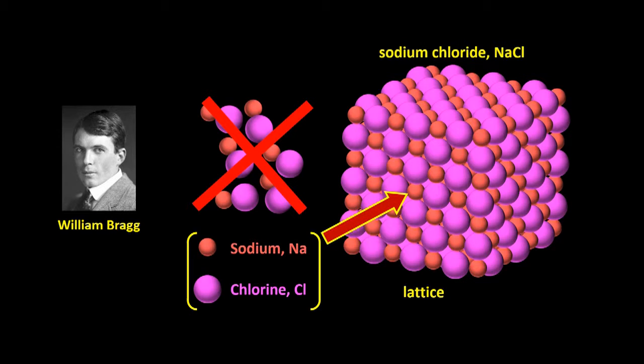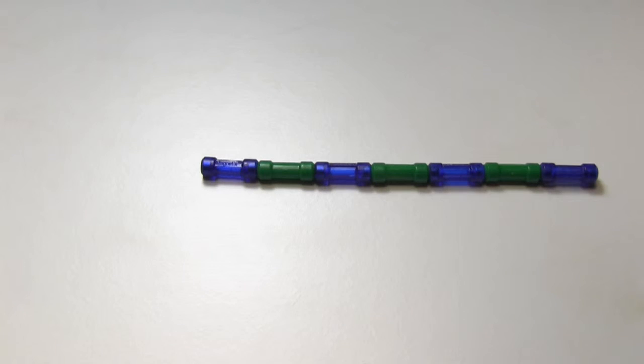This Na atom is bonded not just to one Cl atom, but to these four, and to the one behind it, and, if there was another layer, to the one in front of it. Likewise, this Cl atom, for example, is bonded to these four Na atoms, and also to the one behind it, and, if there was another layer, to the one in front of it. The atoms joined together kind of like a long strand of magnets, but form a three-dimensional lattice.